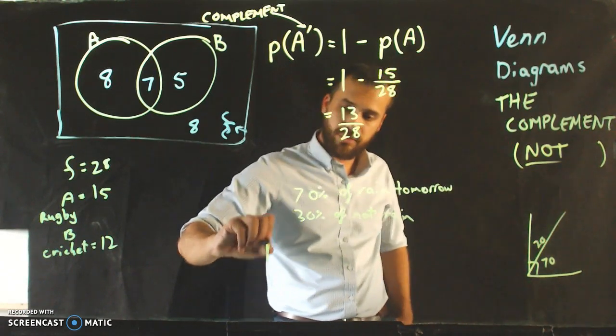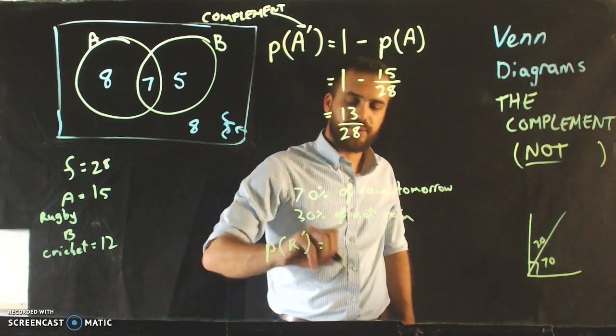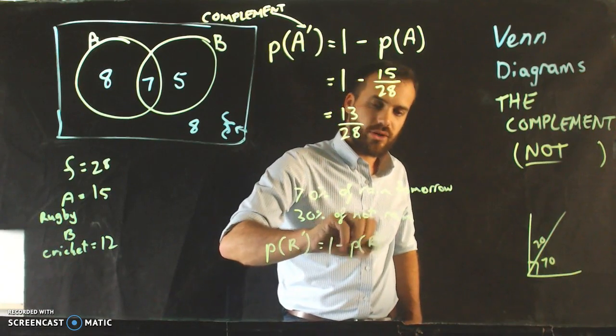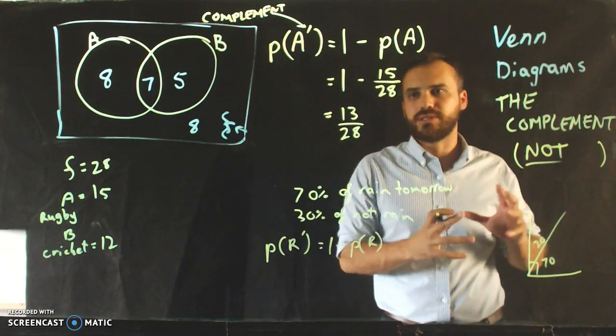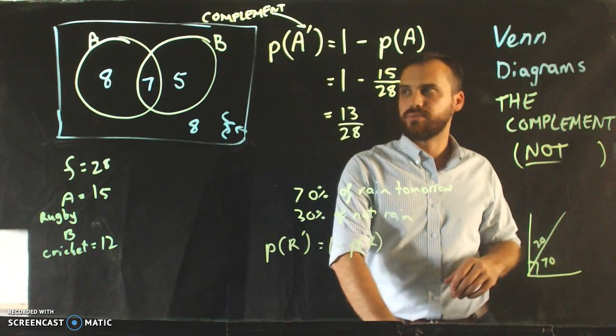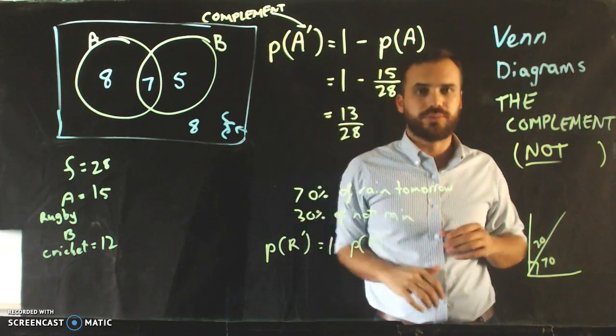And we can show that: probability of not rain is equal to 1 minus the probability of rain. That's all we're saying here. That's the complement. The complement - 1 minus something equals the complement of it. Thanks guys.